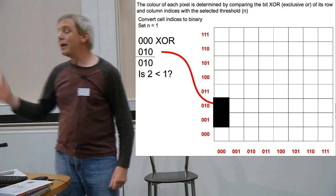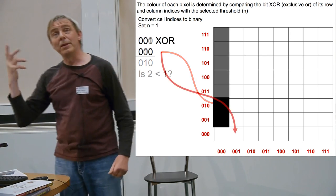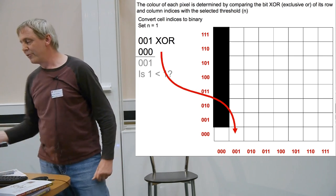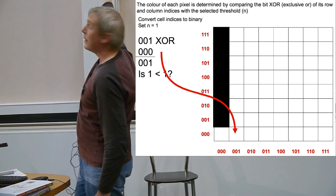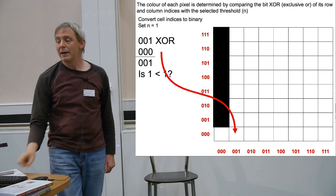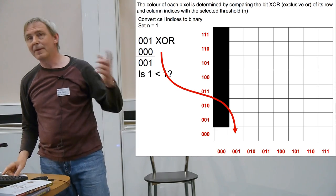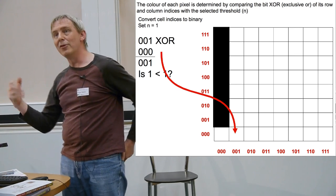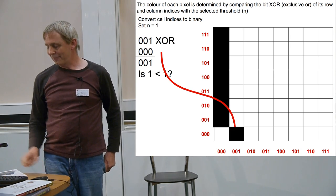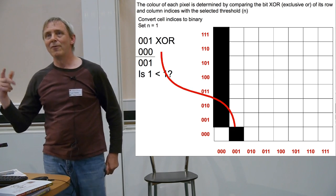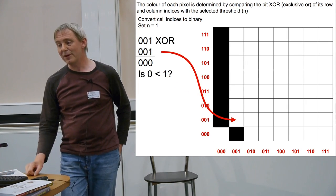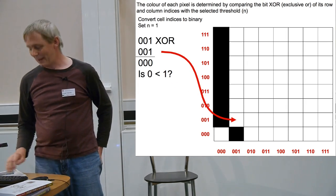We can work our way up, and that first column will all be black apart from the first cell. If we go into the second column, we can exclusive OR the two indices. This time we've got X = 001 and Y = 000. We exclusive OR those and end up with 1. Is 1 less than 1? No, it isn't, so that one's black. And of course on the next cell, exclusive ORing those bits gives us 0. Is 0 less than 1? Yes, so we get white.